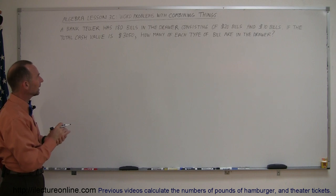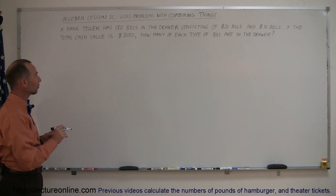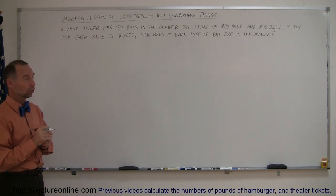It says a bank teller has 180 bills in the drawer consisting of $20 bills and $10 bills. If the total cash value is $3,050, how many of each type of bill are in the drawer?